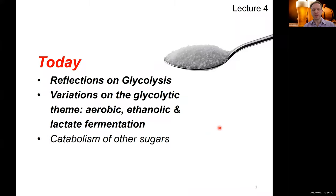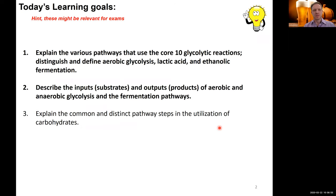Hello everyone. This is our next chapter in our journey through metabolism and bioenergetics, BIS 103 lecture 4. What we want to do today is recap what we learned in lecture 3 on glycolysis, then dive into some variations on this glycolytic theme — specifically ethanolic and lactate fermentation: what do we do with breaking down sugars for energy when oxygen is not present? In addition, we have a briefer chapter on the catabolism of other sugars.